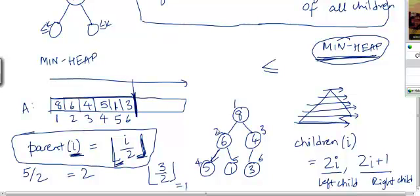So the children of 2 for example are 4 and 5. The children of 3 are, it's just 6 actually. So how do you know how many children a particular node has?